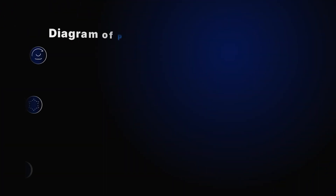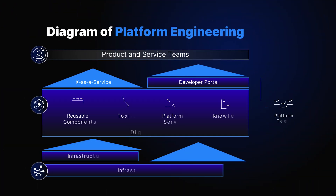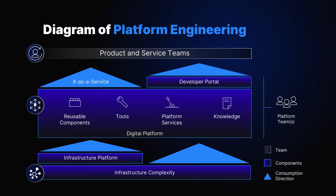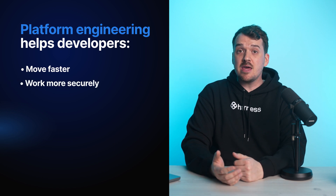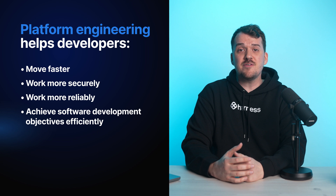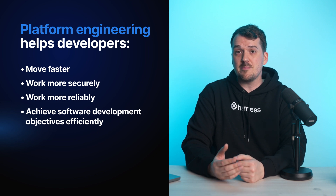Platform engineering is the backbone of modern software development and infrastructure management. It's all about designing and maintaining the foundational systems that support the development, deployment, and operation of applications. The goal of platform engineering is to provide automation and self-service abstractions that empower engineers to focus on writing and delivering software for the business. By enabling developers to move faster, more securely and more reliably, platform engineering ensures the organization can efficiently achieve its software development objectives.